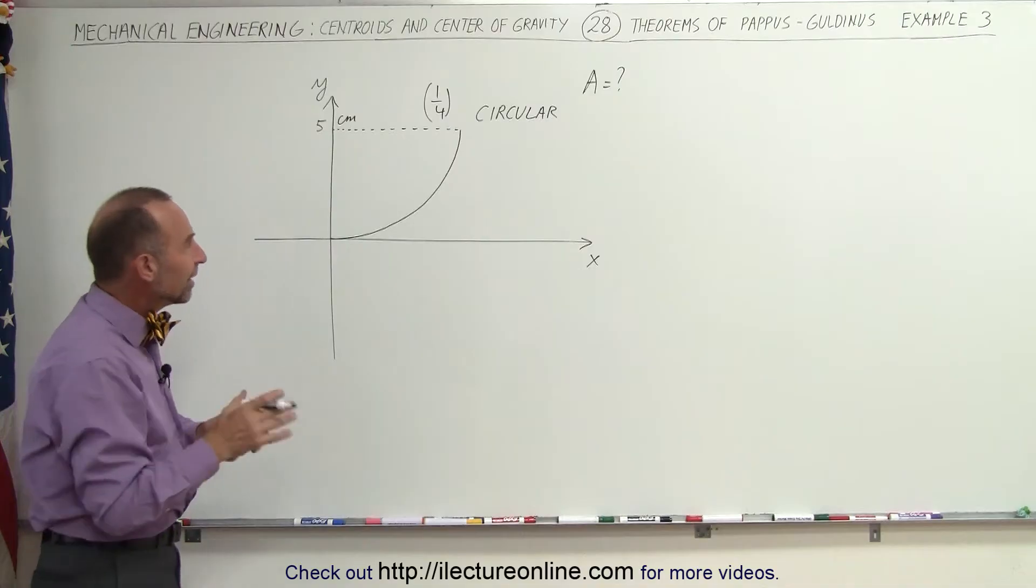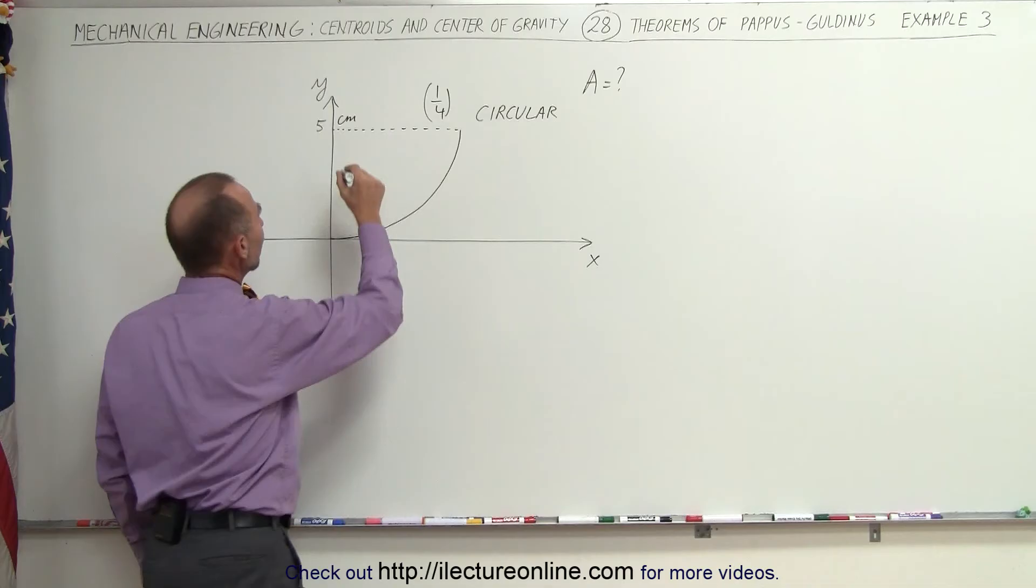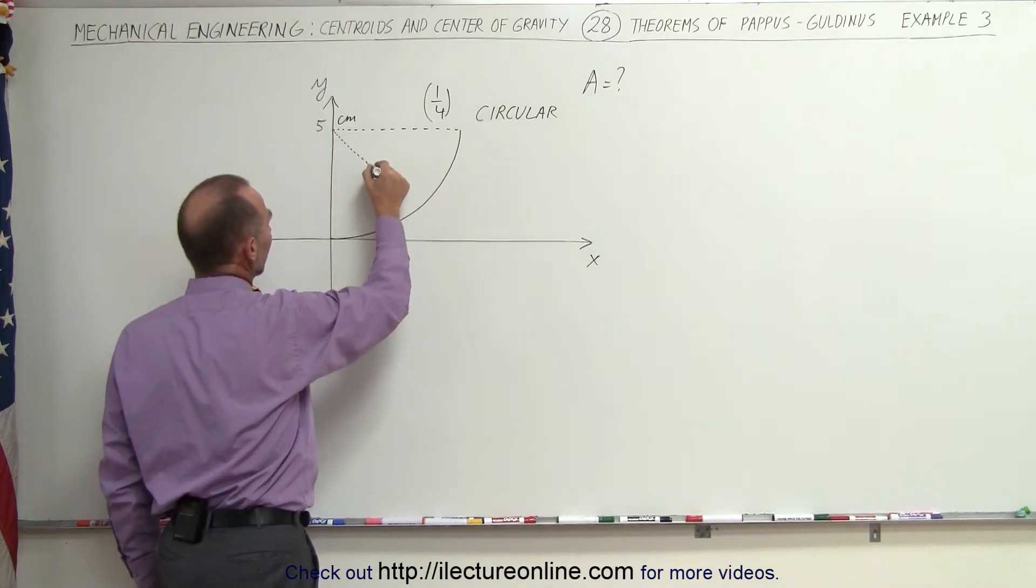The difference here between this and the previous example is that the curve is in a different direction. Now the centroid is going to be found when you draw a 45 degree line in this direction.